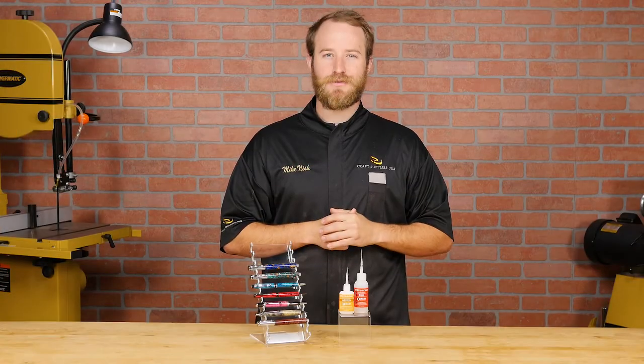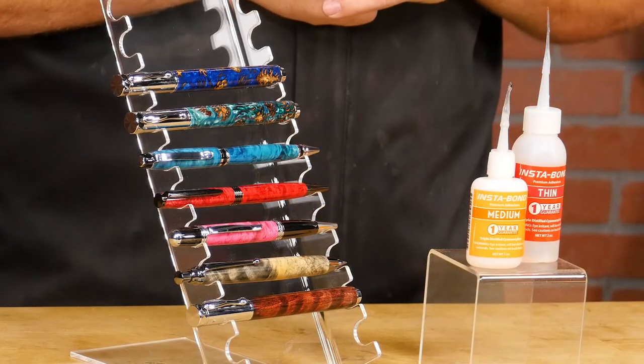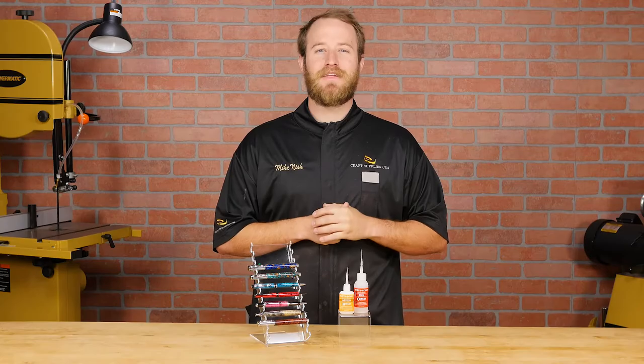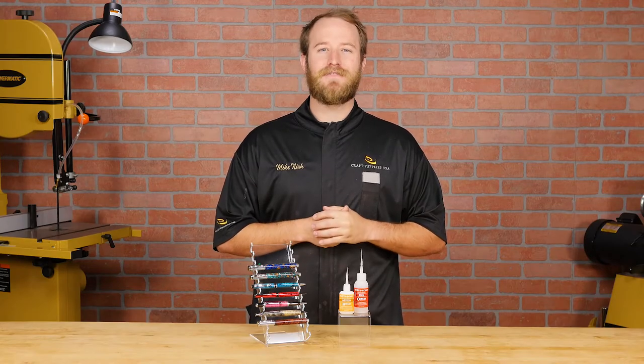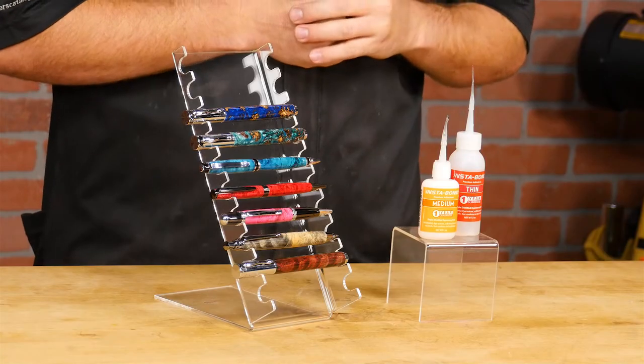It is the best finish we've found and can be used on all woods, stabilized woods, and even acrylics. I've spent years perfecting my method and in this video I'll show you how to apply a CA finish to a wooden pen, but you can use the same process for any pen or project.